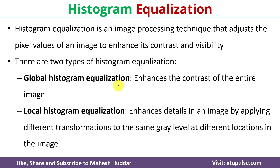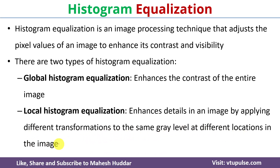In histogram equalization there are mainly two types: global histogram equalization and local histogram equalization. Global histogram equalization enhances the contrast of the entire image, whereas local histogram equalization enhances the details in an image by applying different transformations to the same gray level at different locations in the image.